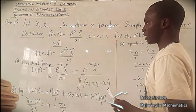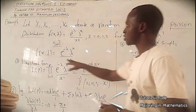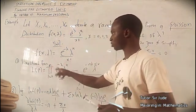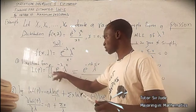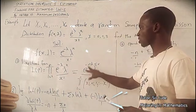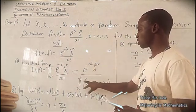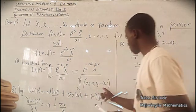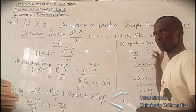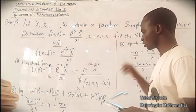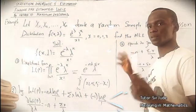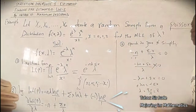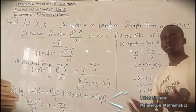So that is just how to solve this kind of problem. You state the problem, take the likelihood and multiply it by the constant. You simplify, apply the log, differentiate, equate to zero, and solve. That gives you the MLE of λ.